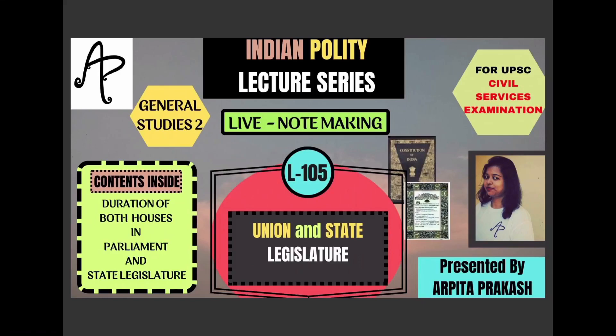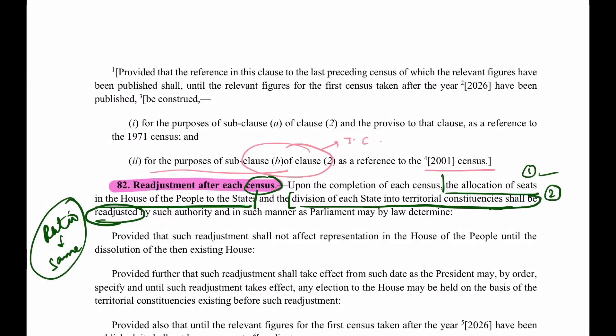Hi everyone. We are done with the composition, organization, and how the systems of election take place for the lower houses and the remaining things for the upper houses. Now what we have to focus on is how the sequence in the constitution goes ahead, which is about the duration of both the houses in parliament and state legislature also.